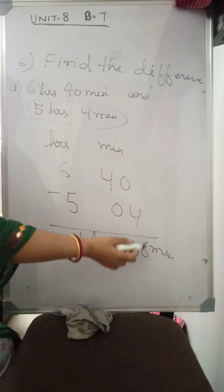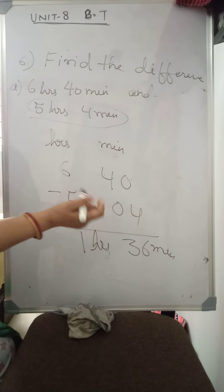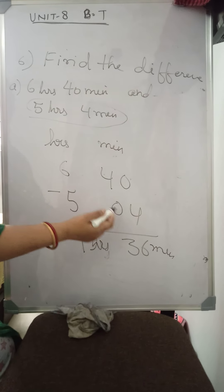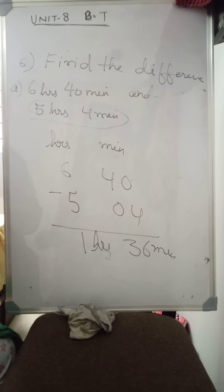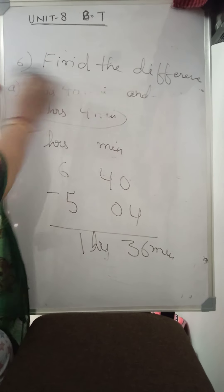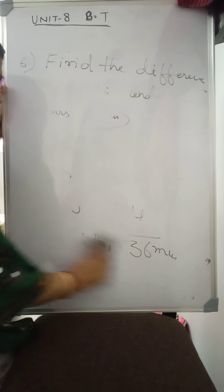Let us check it: thirty-six plus four is forty, carry one — three plus one is four, one plus five plus one is six. Verified. Now come to the next question.